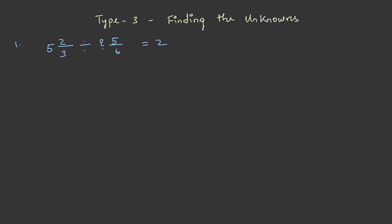Let us find out the value of the unknown in the given question. Let us solve the Type 3 questions, that is finding the unknowns. Here we can find two mixed fractions given and it is equal to 2. There is a division symbol in between, with 17 by 3.